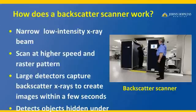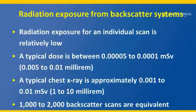These scanners provide images of an object with anything on the surface. That is one of the reasons when we are traveling, we are asked to empty our pockets so that nothing shows up as a suspicious object on the travelers. The radiation exposure for an individual scan in the backscatter scanner is quite low. A typical dose is so low that one has to undergo nearly 1,000 to 2,000 backscatter scans in order to get a dose equivalent to one chest X-ray.